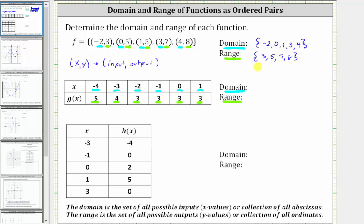So to give the domain in curly brackets, we have {-4, -3, -2, -1, 0, 1}. It is common to give the list in order from least to greatest. For the range, we have {3, 4, 5}. Again, even though three occurs multiple times, we only list it once.